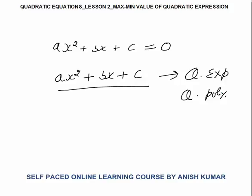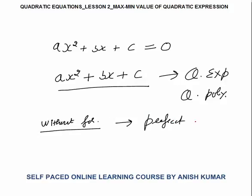You can say this is a quadratic expression or a quadratic polynomial. We have to find the maximum or minimum value of this quadratic polynomial, and this will depend on the constants a, b, and c. The best method — without a formula — to calculate the maximum or minimum value of any quadratic expression is to make a perfect square.